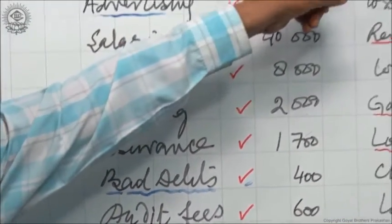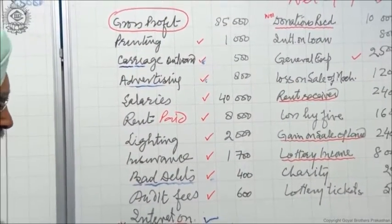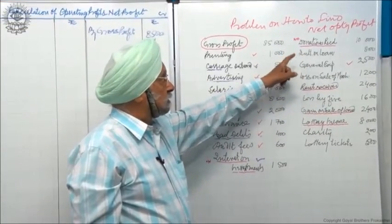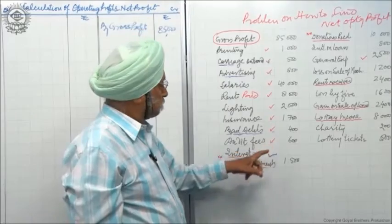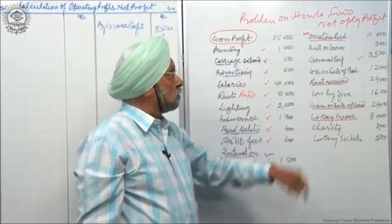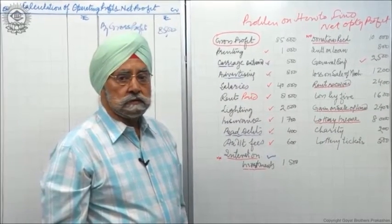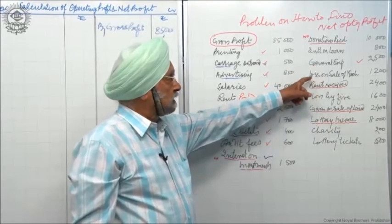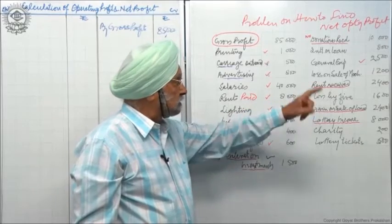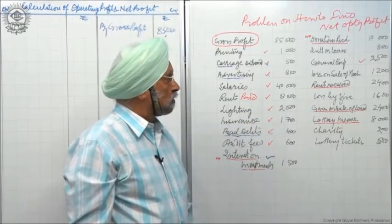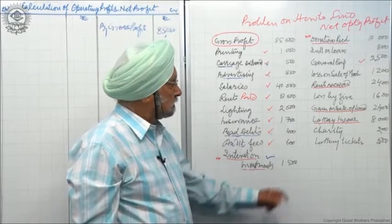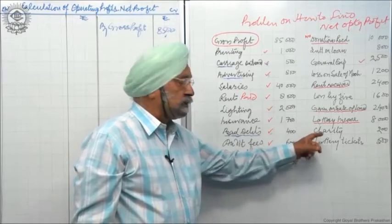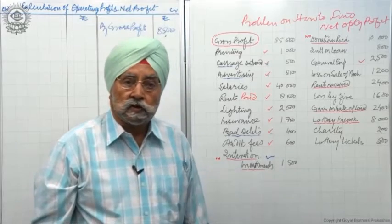Donation received is non-operating income. Interest on investments received is also non-operating income. Interest on loan is a non-operating expense. General expenses are operating. Loss on sale of machinery is non-operating. Rent received is non-operating income. Loss by fire is a non-operating loss. Gain on sale of land is a non-operating gain. Lottery income is non-operating income. Charity is a non-operating expense, and lottery ticket is also a non-operating expense.